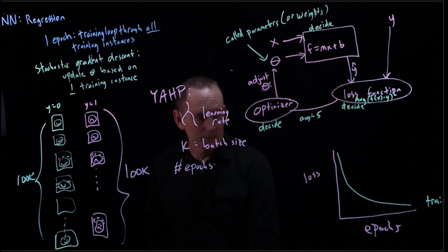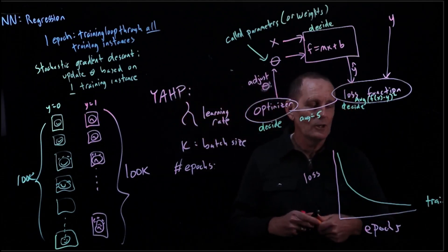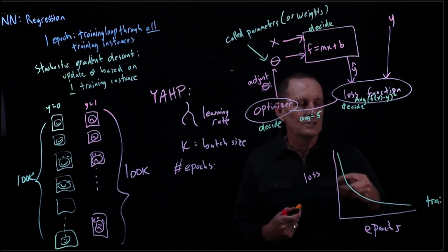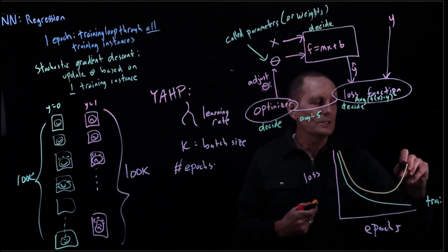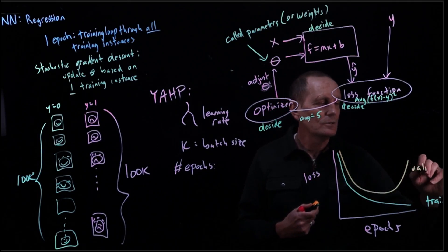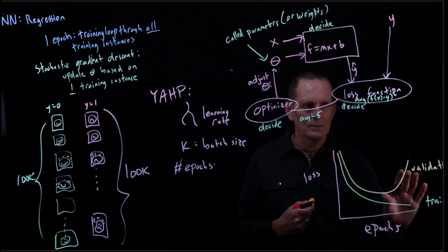And then we have a validation loss, which tends to go down, but then starts increasing. And again, this is the overfitting here.